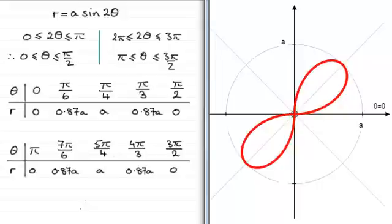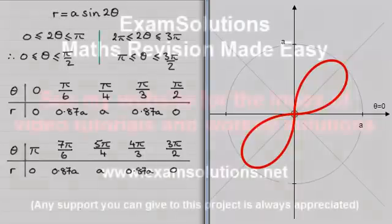Well I hope that's given you some idea on how we go about sketching something like this. Notice then how we always have to set our range of values for theta so that we create r as a positive value.